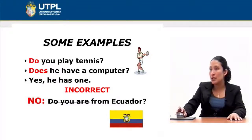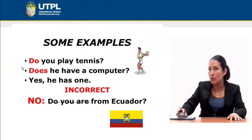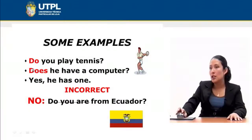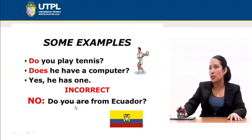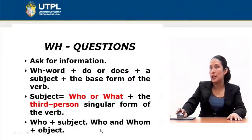'Do you are' is incorrect. The correct form is 'Are you from Ecuador?' — this uses the simple present form of 'be'. Or, if you change the verb: 'Do you come from Ecuador?' or 'Does she live in Ecuador?' These are examples that can be used correctly with 'do' or 'does'.